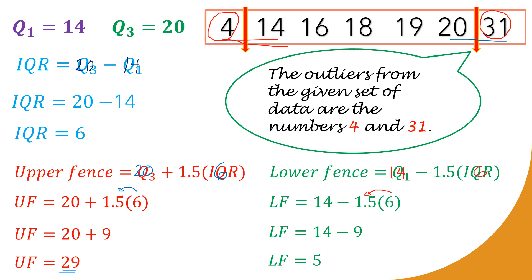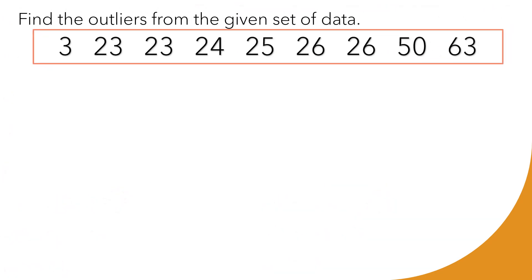Let's have another example. Find the outliers from the given set of data: 3, 23, 23, 24, 25, 26, 26, 50, 63. We might think we can just simply guess the outliers, and we could be correct, but there will be times we might get the wrong answer. So to be certain, let us use the step-by-step process.